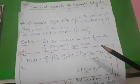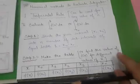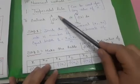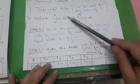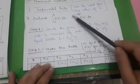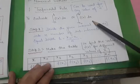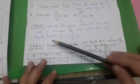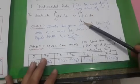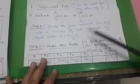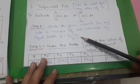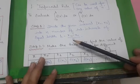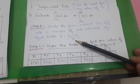In step one, you need to find the equal width h using the given lower limit and upper limit of the integration and the number of intervals you want to construct. Here, the number of intervals must be a multiple of three.